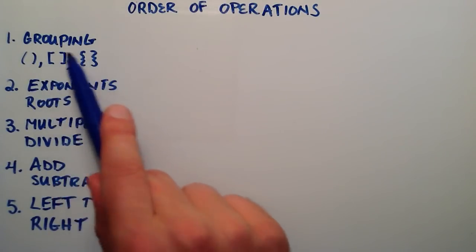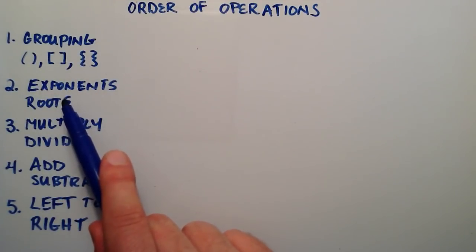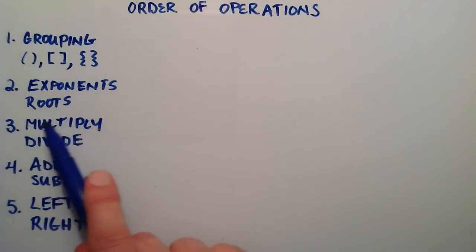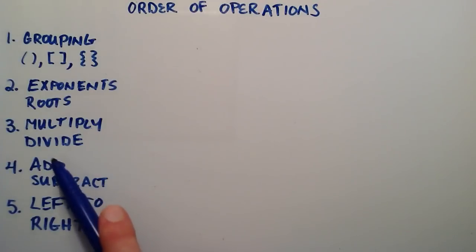Once we've done all the math inside these things, then we solve any exponents and roots that we may have. And once those are done, we multiply and divide. And after multiplication and division, we add and subtract.